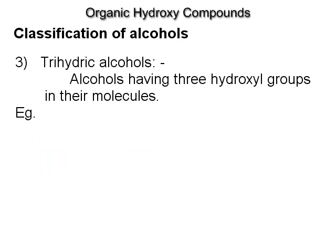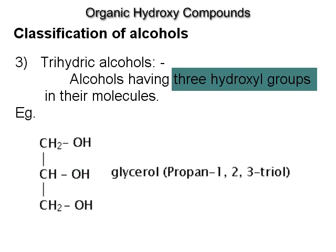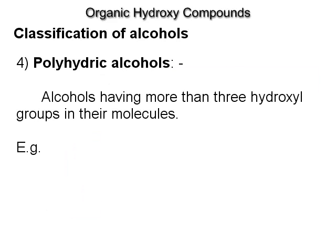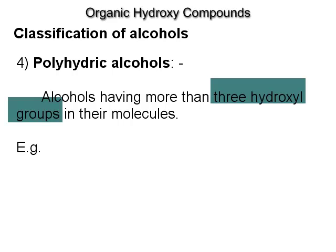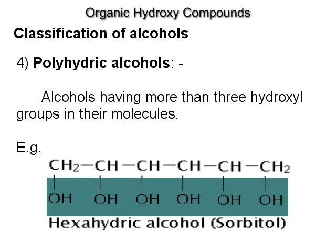Trihydric alcohols have three hydroxyl groups in their molecules, for example, glycerol, which is propane-1,2,3-triol. Polyhydric alcohols have more than three hydroxyl groups in their molecules, for example, hexahydric alcohol, sorbitol.